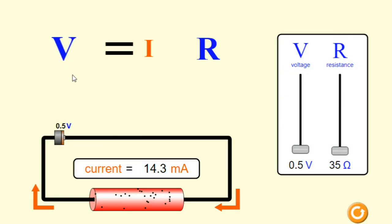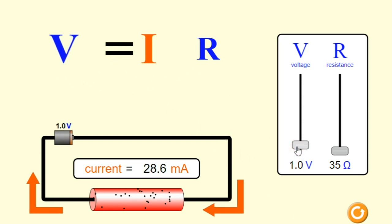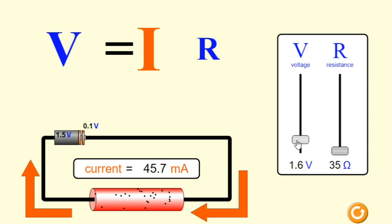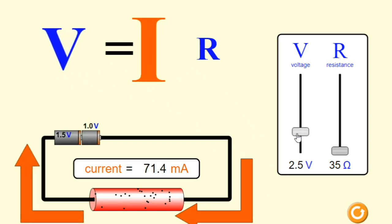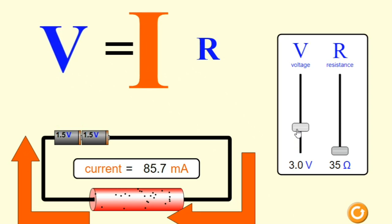The V-I graph for ohmic materials is a straight line. The product of I and R equals voltage, now that V equals I R according to Ohm's law. If we increase the voltage while maintaining a constant value for either I or R, the other value increases.